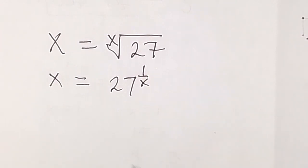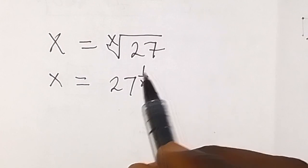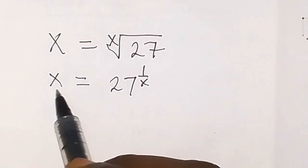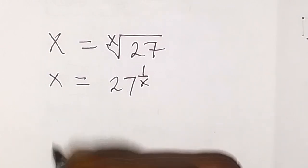And from here now we can remove this power which is 1 over x by multiplying both sides with power of x.